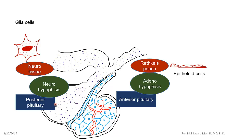There is a very close association between the neurons and the posterior pituitary when it comes to the hormones being secreted from the posterior pituitary. We already know that we have the anterior pituitary and the posterior pituitary, and these two parts of the pituitary gland have different embryological origins — that's a point to note.